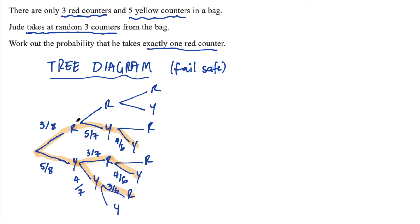Now we need to work out the probability of each branch. So for this branch up here, red, yellow, yellow, we're picking a red, which is three out of eight, and a yellow. So we multiply. Remember when we say and in these types of problems, we multiply. So three on eight multiplied by five on seven multiplied by four on six.